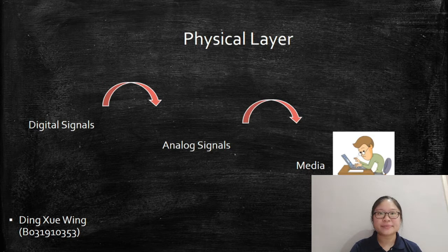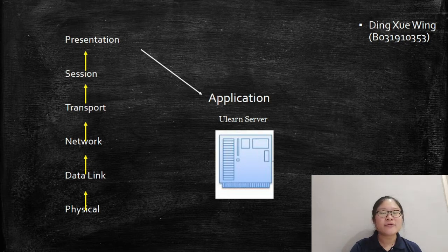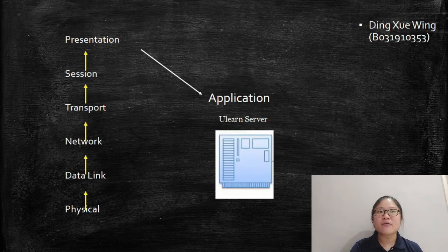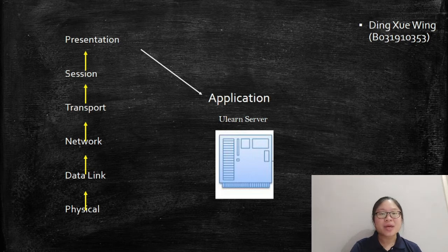So, the data receiving process in ULEARN system server is actually the reverse of the send process. Formatting and addressing information are stripped away at each layer as it is passed through the layers until it arrives at application layer, where it is returned to its original state that can be interpreted by the ULEARN server.